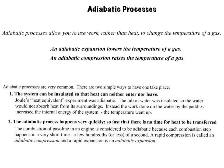So adiabatic processes allow you to use work rather than heat to change the temperature of a gas. An adiabatic expansion lowers the temperature of a gas, and an adiabatic compression raises the temperature of a gas. They're quite common processes too, and there's two simple ways then to have one take place. First, the system can be insulated so that heat cannot enter or leave, such as Joule's heat equivalent experiment. Also, the adiabatic process happens really quickly so there's no time for heat to be transferred, such as in a combustion engine.